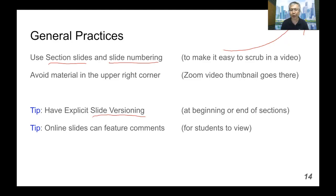Especially if you're shooting over multiple cohorts and terms, you might want to have version information up front so students know they're viewing the appropriate version from the correct term. Finally, online slides can feature comments, which is very helpful — especially if you're using Google Slides or if you've allowed comments on YouTube. Students can make their comments there and help you improve your content, which is what I'd suggest you do for this video.